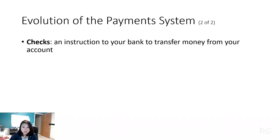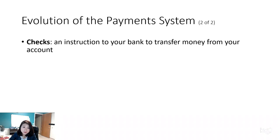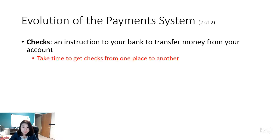The third payment system, very popular in the United States, is checks — an instruction to your bank to transfer money from your account. For instance, if you want to give a friend two thousand dollars, instead of handing them a thick pile of cash, you just write one piece of paper: a check. Checks fix the problems of fiat money — if someone steals your check, you can call the bank to cancel it. And two thousand dollars in check form is just one piece of paper, making it very easy to transport.